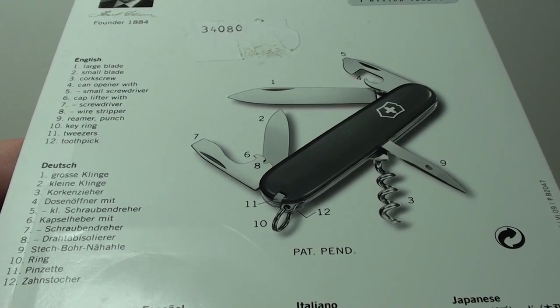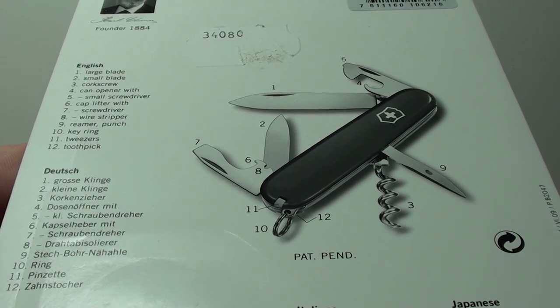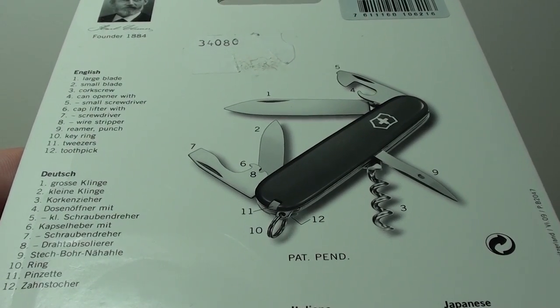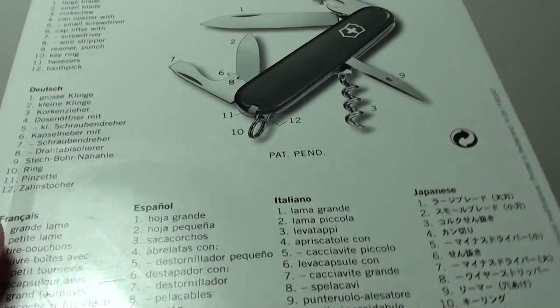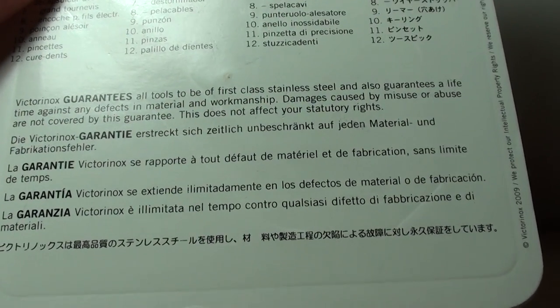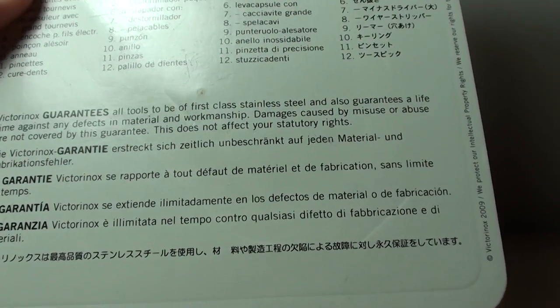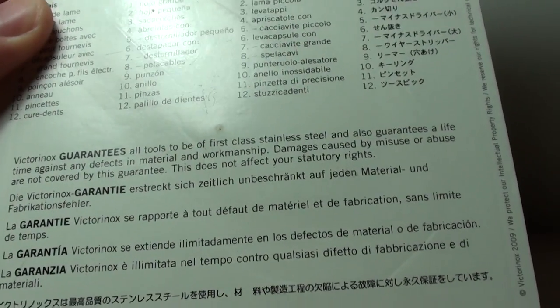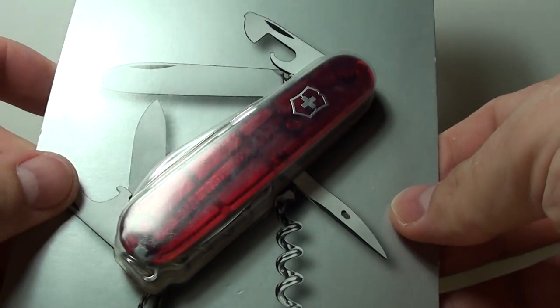You have a large blade, small blade, corkscrew, can opener with small screwdriver, cap lifter with a screwdriver and wire stripper, reamer punch, keyring, tweezers and a toothpick. So all together we have 12 functions, and as you can see there is a lifetime warranty from Victorinox for material and workmanship, for any defects.